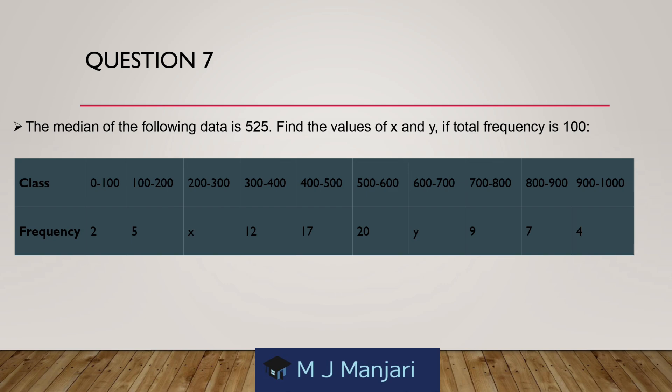Question 7. The median of the following data is 525. Find the value of x and y if the total frequency is 100. A table is given for your reference.